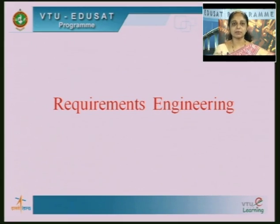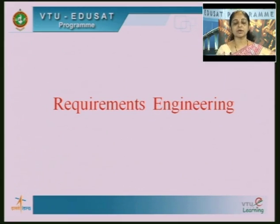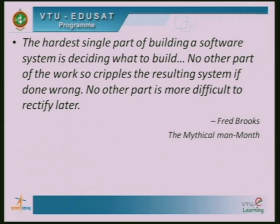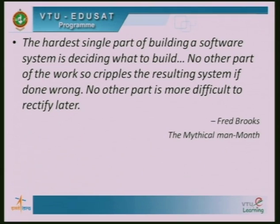Now let us move on to the next topic: requirements engineering. We will start with a saying from Fred Brooks, who says that the hardest single part of building a software system is deciding what to build. No other part of the work so cripples the resulting system if done wrong. This tells us the importance of the requirements engineering process — if your requirements engineering process goes wrong, the resulting system will come out wrong.